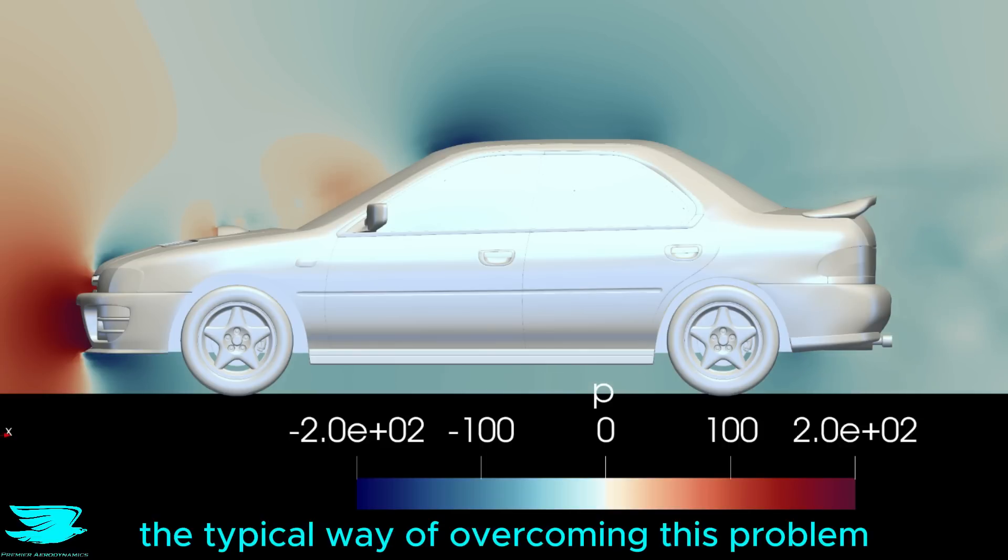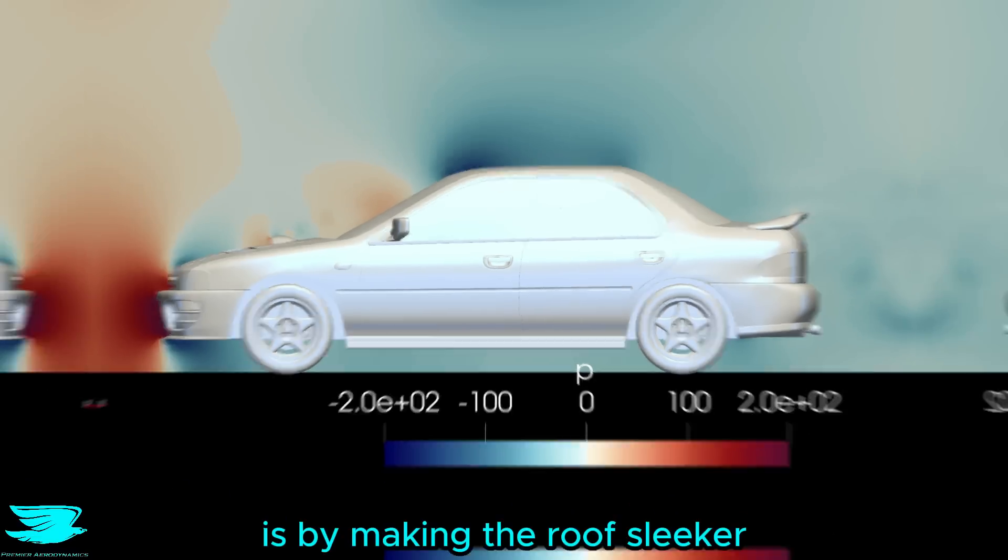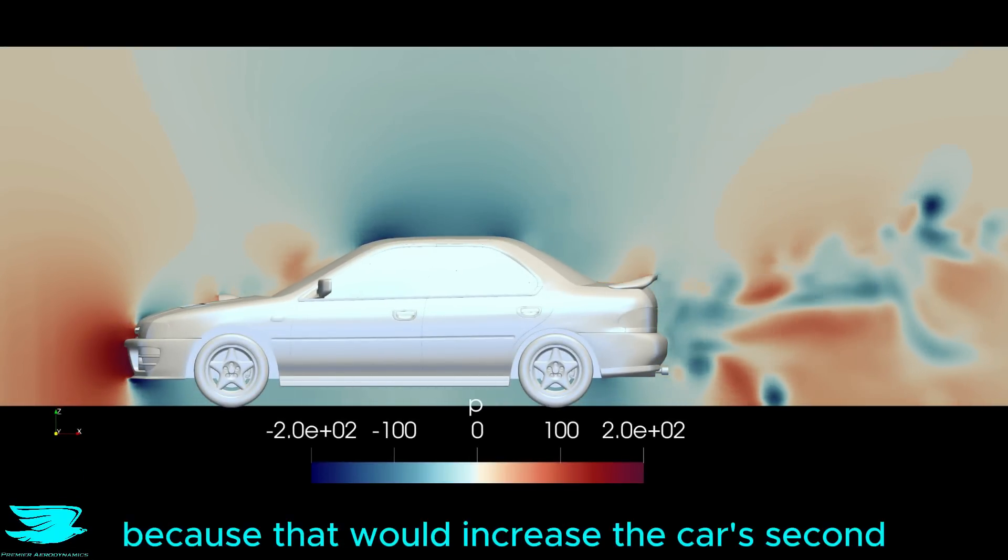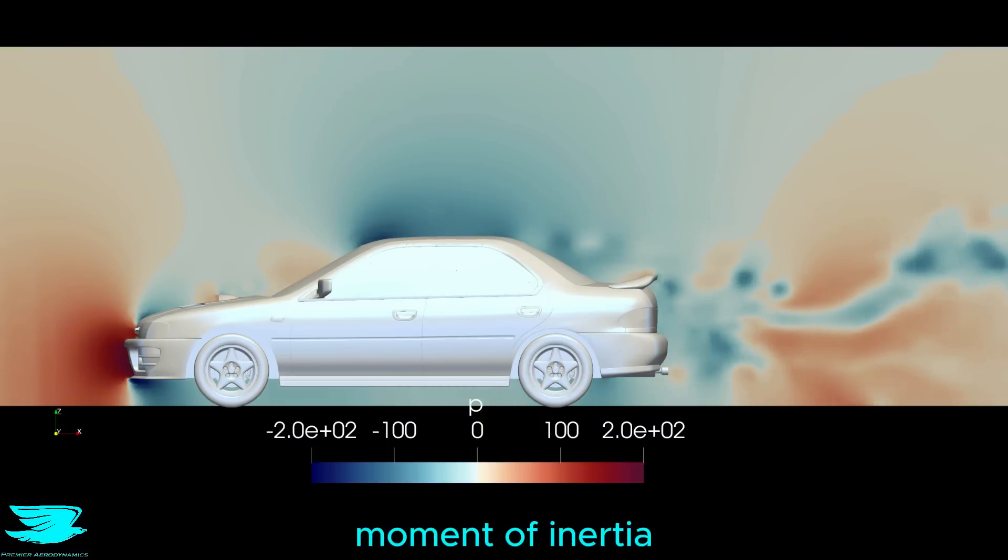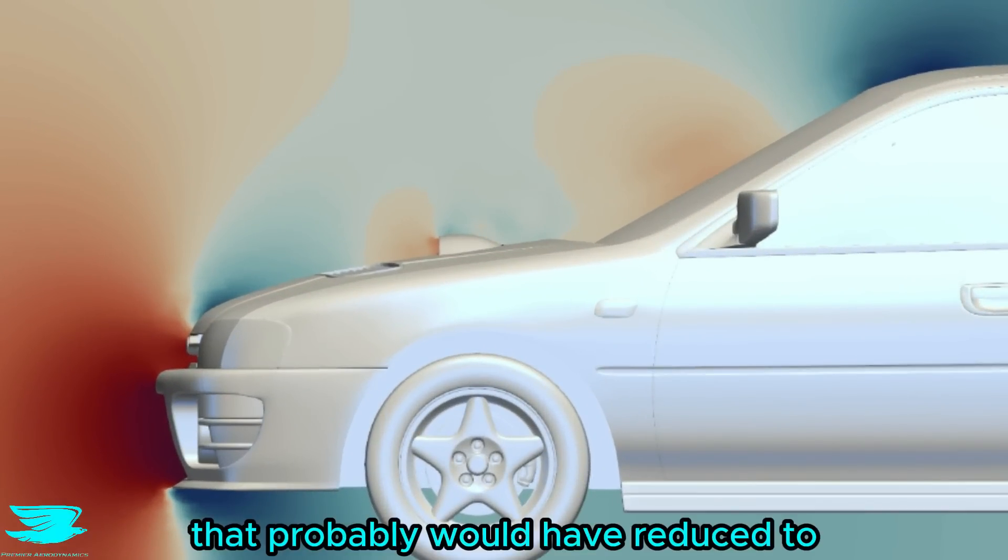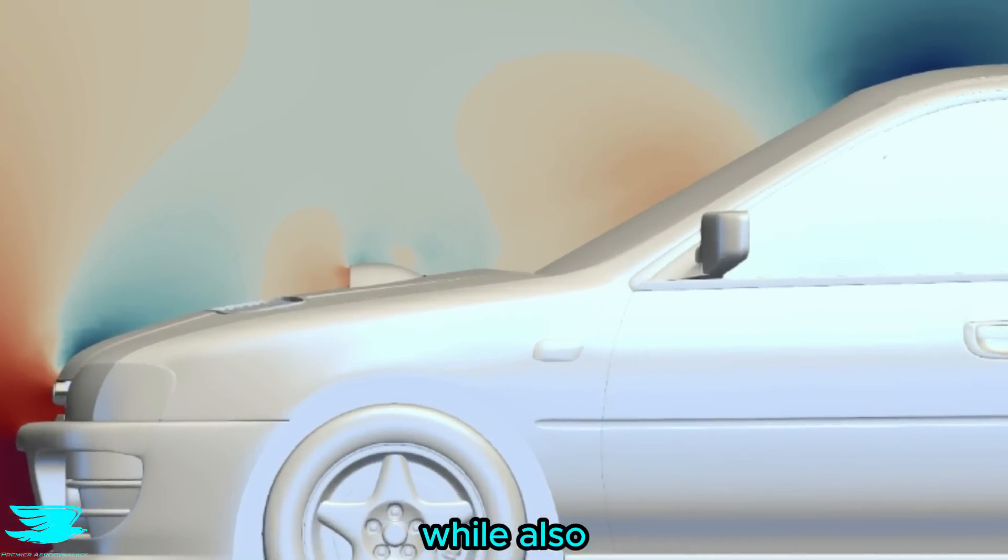The typical way of overcoming this problem is by making the roof sleeker, which would probably have made the car longer, which for rallies isn't good because that would increase the car's second moment of inertia and make it harder to change directions. Alternatively, if they made the hood more sloped, they probably would have reduced some of this low pressure while also reducing the high pressure on the front windshield, which would have reduced the drag at the same time.